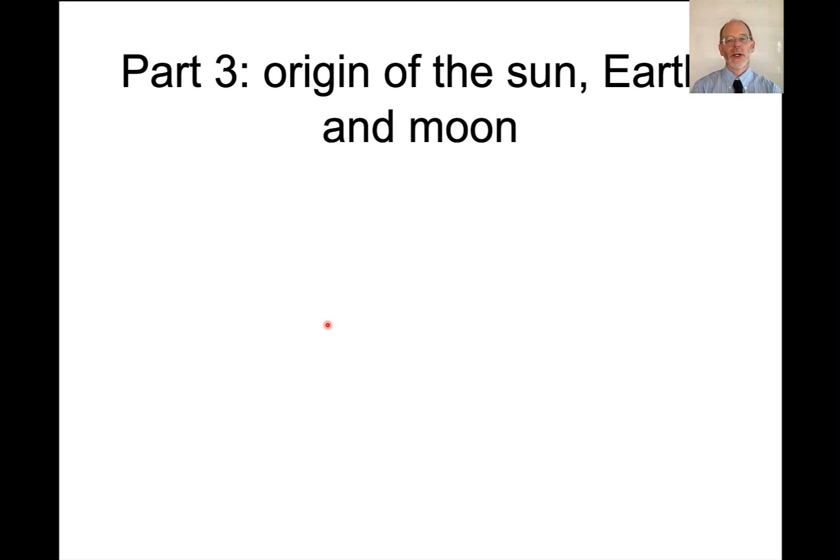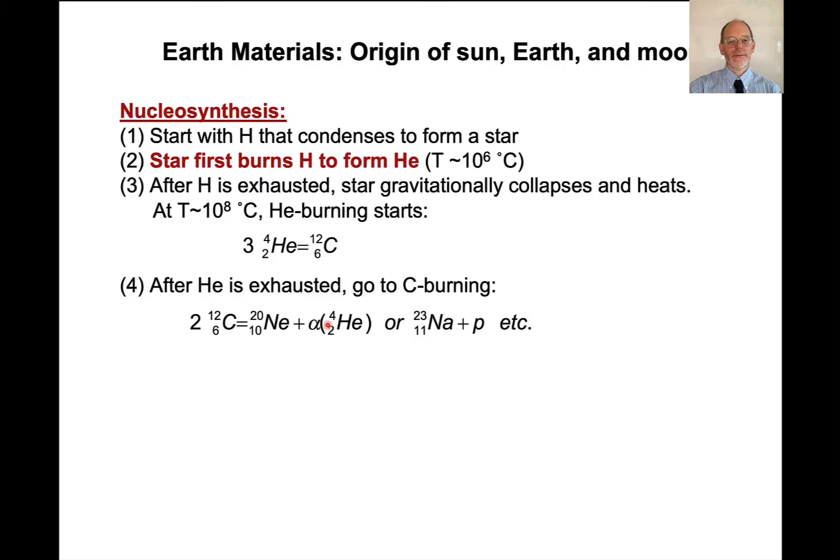So now I want to turn from atoms and isotopes, the nitty gritty of those nuclear reactions, to talk more about the origin of the sun, the earth, and the moon. So as I mentioned, the way that these systems begin is that you start with hydrogen and a little bit of helium, but mostly hydrogen. And this hydrogen condenses to form a star.